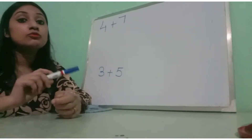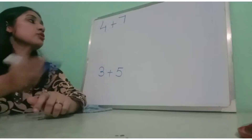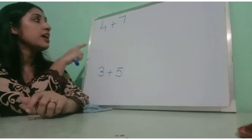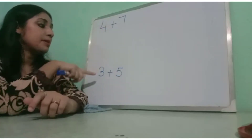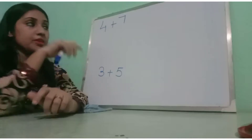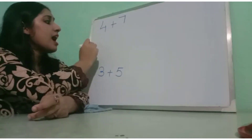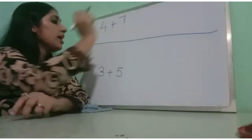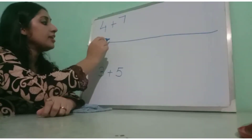So now I have written here two addition problems: 4 plus 7, and 3 plus 5. Now see children, I am drawing a line here for the number line.